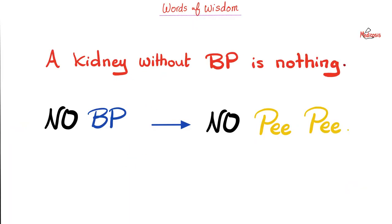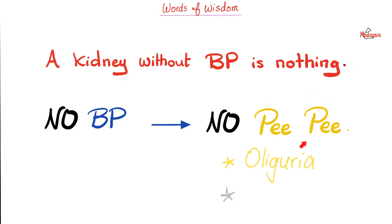Punctuation is important. A kidney without blood pressure is absolutely nothing. As a friend used to say: no BP, no PP. If you do not have adequate blood pressure, you will not be able to perfuse your kidney and will not be able to make any urine. That's why one of the common causes of oliguria or anuria is hypotension — pre-renal azotemia.